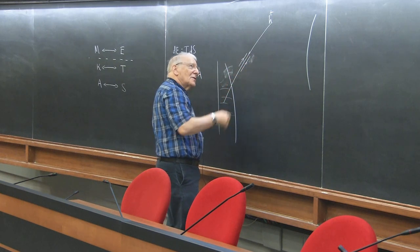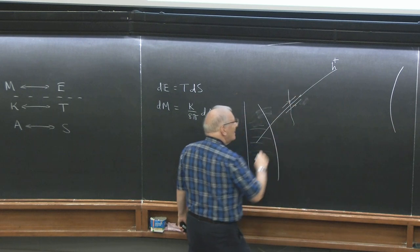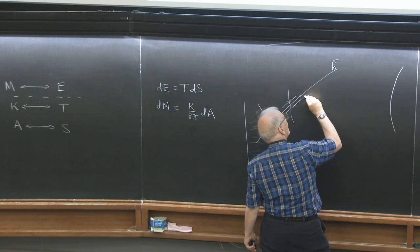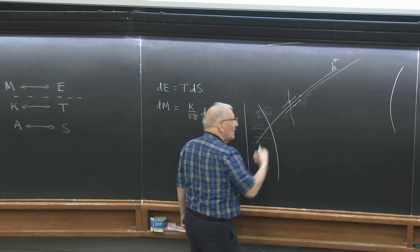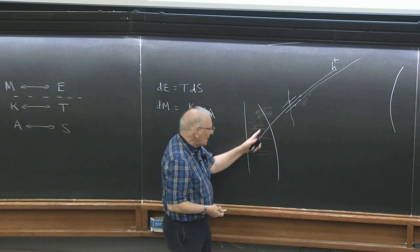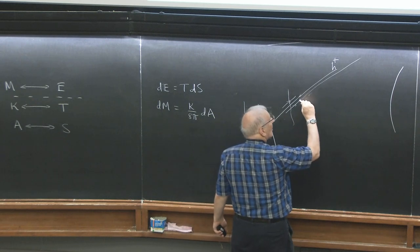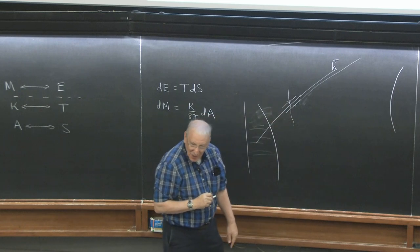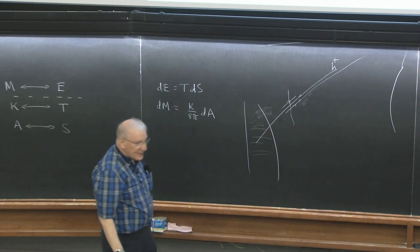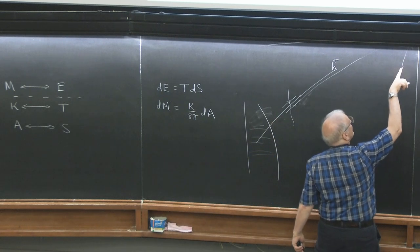You have these pairs of particles which, alternatively, could be viewed as vacuum fluctuations by some observer falling into the black hole. One of the particles in the pair is inside the black hole — unless you trace it back to before the gravitational collapse occurred. The other particle may well fall into the black hole, but it may also make it out to infinity and be observed by a distant observer.